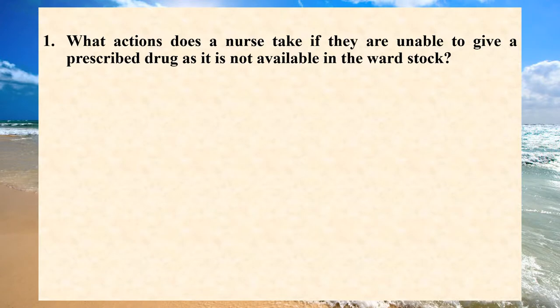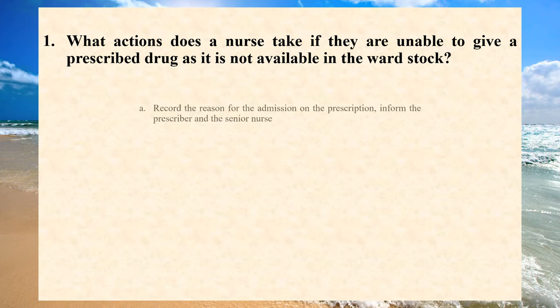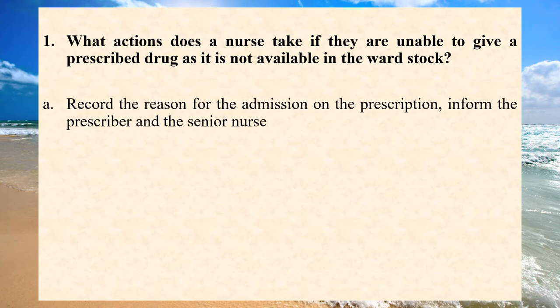What actions does a nurse take if they are unable to give prescribed drugs as it is not available in the ward stock? A. Record the reason for the omission on the prescription, inform the prescriber and the senior nurse.